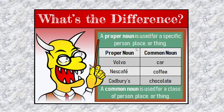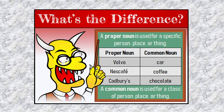Now, to explain further, let us see the main difference between a proper noun and a common noun. A proper noun is used for a specific — means particular — person or place or thing. For example, Volvo is a particular name of a car, so Volvo is a proper noun and car is a common noun. Nescafe is a particular name of a coffee, so Nescafe is a proper noun and coffee is a common noun. Cadbury is a particular name of a chocolate, so Cadbury is a proper noun and chocolate is the common noun.